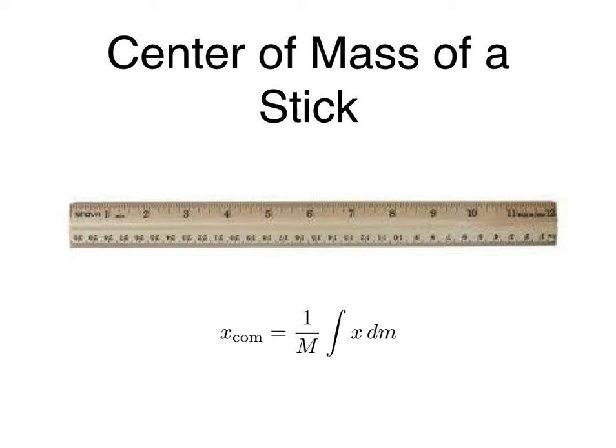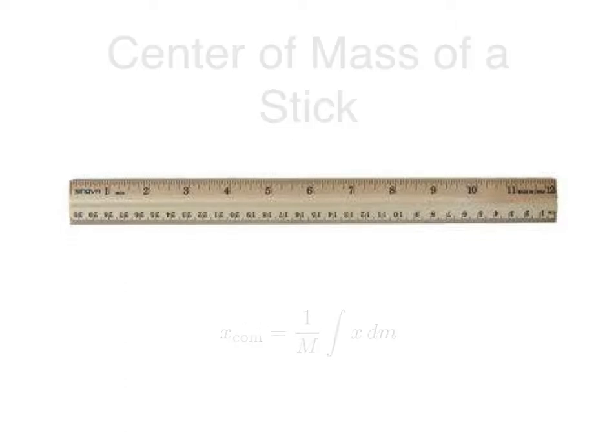But before we get to using that equation, I'd like to point out that you probably already have an instinct about where the center of mass of the stick is. This thing is symmetric about both axes, and so by instinct you probably would guess that the center of mass is right at the center of the stick. But how do you make an argument that this is the case?